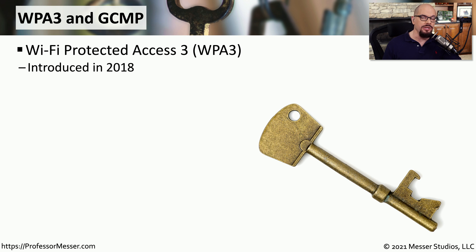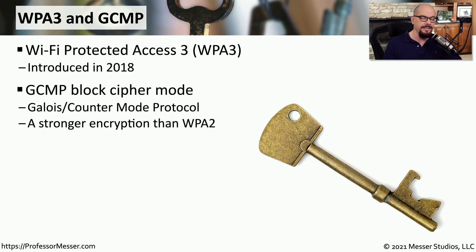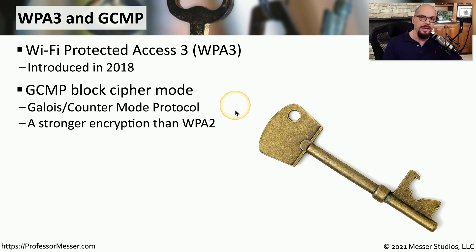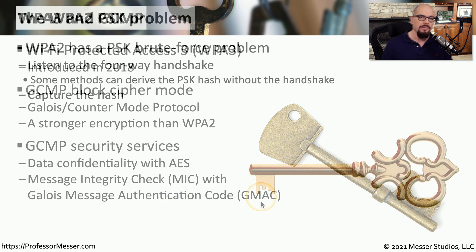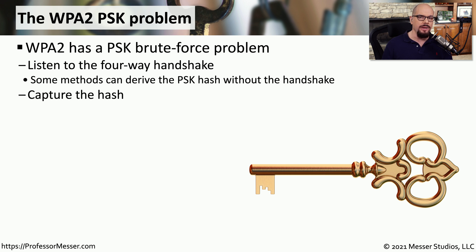The update to WPA2 security is WPA3, version 3 of the WPA protocol introduced in 2018. It uses a different block cipher mode called GCMP — Galois Counter Mode Protocol — which provides stronger encryption than the older WPA2 protocol. The confidentiality of the data still uses AES, but the message integrity check has changed to Galois Message Authentication Code, or GMAC.